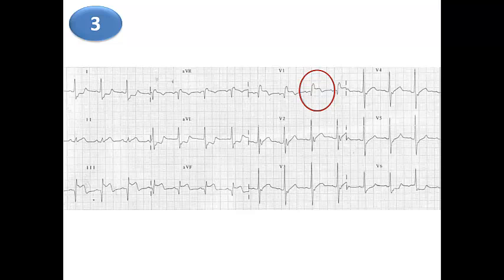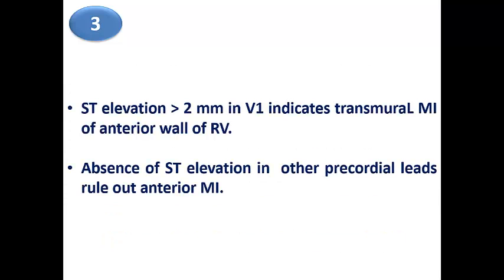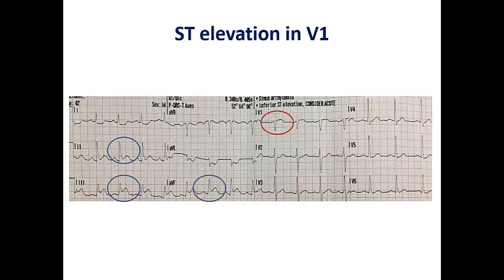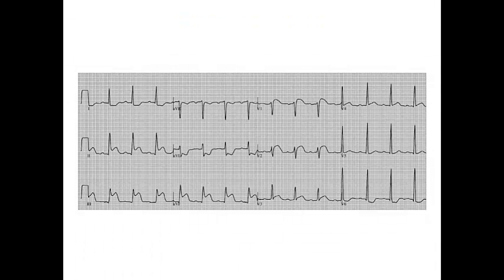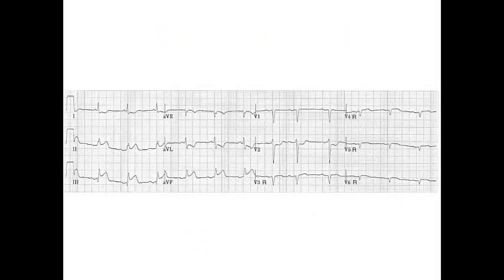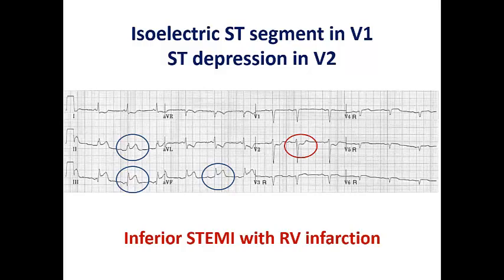The third sign is ST elevation in V1 more than 2 mm, indicating transmural infarction of the anterior wall of the right ventricle. The absence of ST elevation in other precordial leads rules out anterior MI. In this ECG we see inferior STEMI together with ST elevation in V1, suggestive of inferior STEMI with RV infarction. Another example shows inferior STEMI with ST elevation in both V1 and V2 — also a sign of RV infarction, not combined anterior-inferior STEMI, since the other precordial leads show no ST elevation. ST depression in V2 may also sometimes occur with RV infarction, and this is not posterior infarction as there is no prominent R wave.